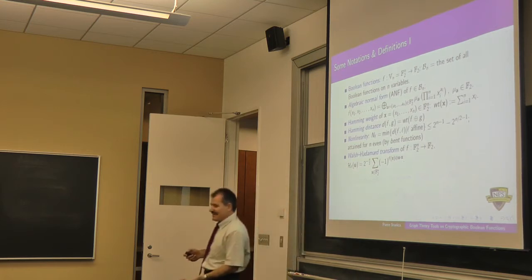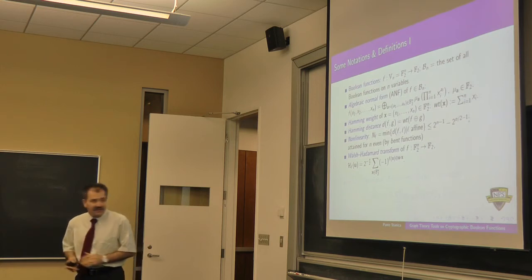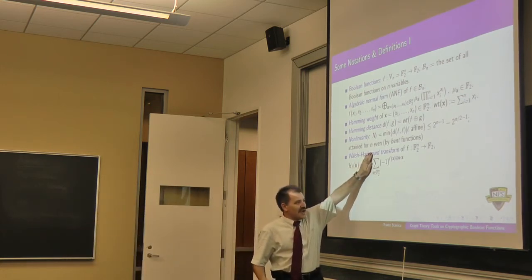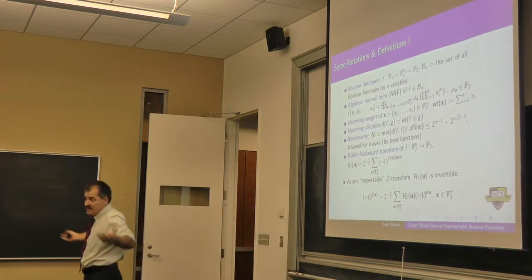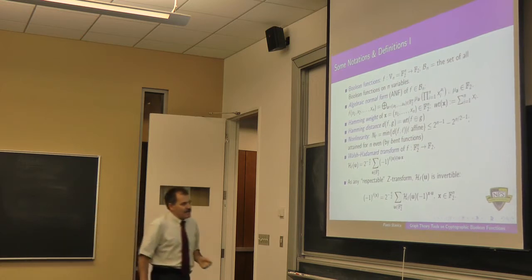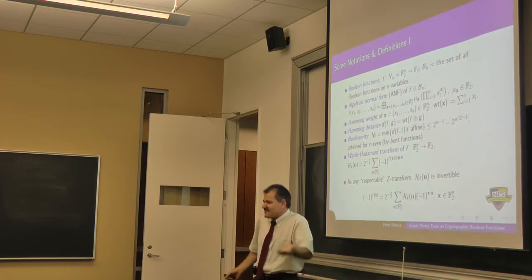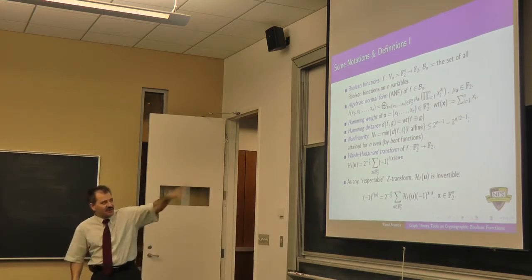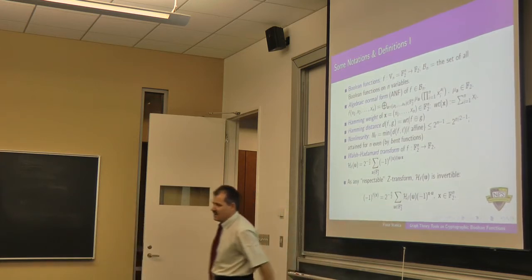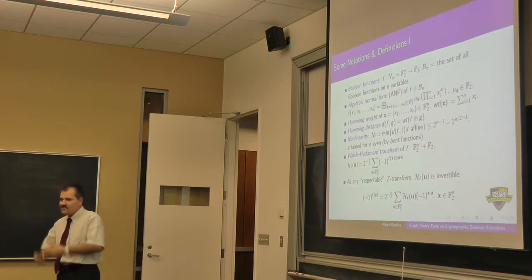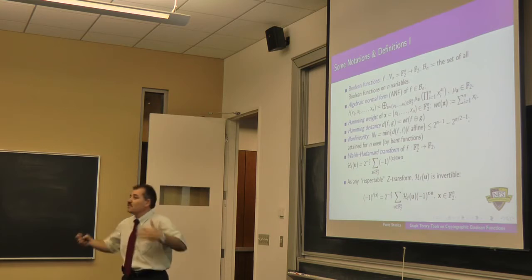Some people prefer not to normalize it and disregard the 2^(−n/2) coefficient. However, when you compute the inverse — as any respectable transform must be invertible — this version is invertible and has the same coefficient in both directions. Not normalizing just changes any result by a constant multiple of 2^(−n); nothing fundamentally changes.